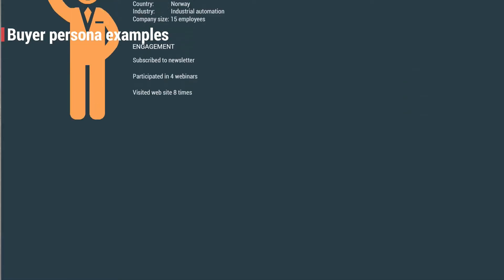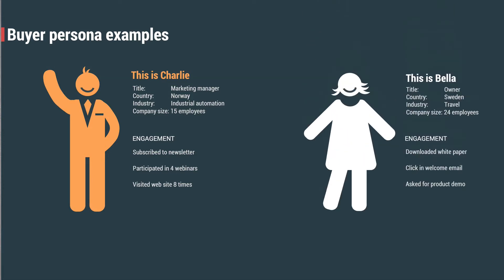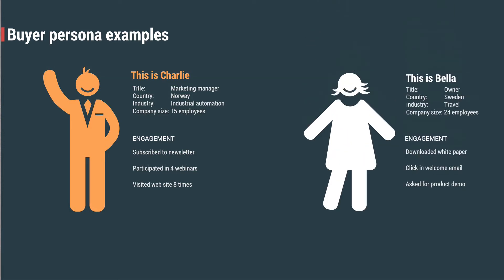Use all the information that you find and build your buyer personas. The data points you have in your buyer personas are what you can base your score rules on. Although this will take time, it's definitely worth it to better understand your customers and leads and to set up score rules that deliver MQLs.